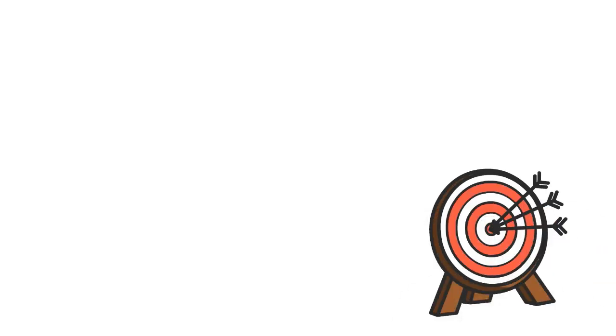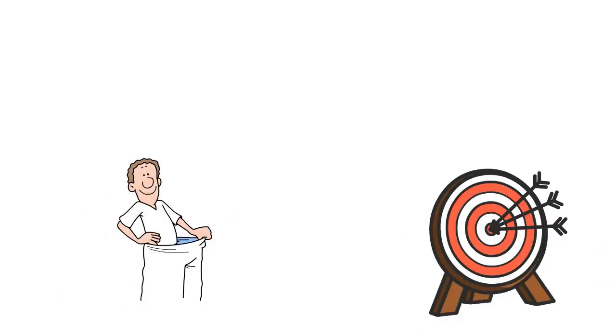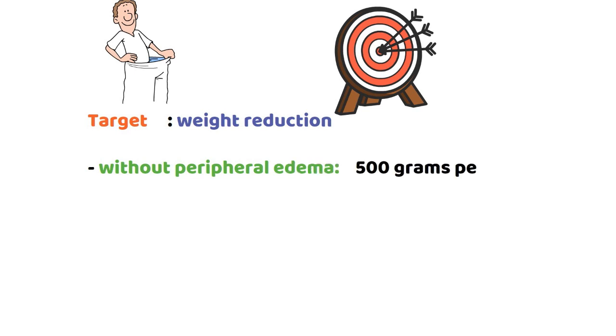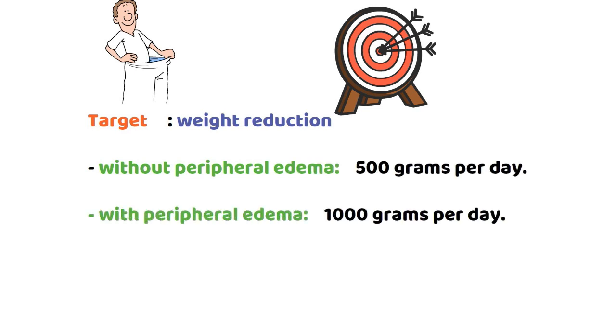The target is weight reduction. Without peripheral edema, the target is 500 g per day. With peripheral edema, the target is 1000 g per day.